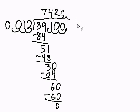Since the decimal is all the way to the right, we can just rewrite the value as 7,425. And that completes our problem.